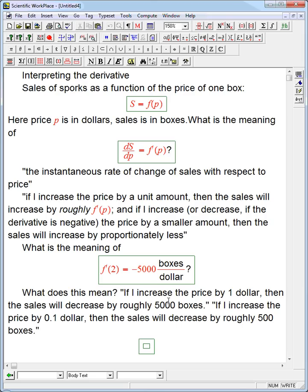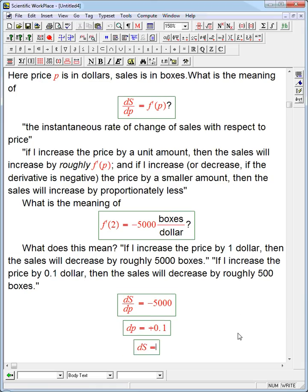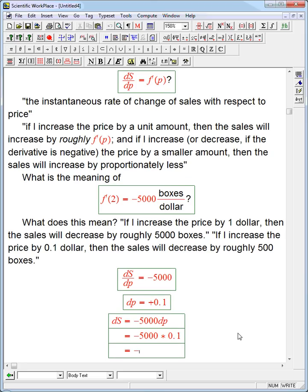If you want to see that in equations, it's because ds over dp is minus 5,000. And in that second case, what I assumed was I'm going to say dp is positive 0.1, an increase in price of 0.1. And then if I just rewrite ds equals minus 5,000 times dp and put in dp as 0.1, then that's going to be minus 500. That's making, turning this proportional reasoning, this proportionately less thing, into algebra.